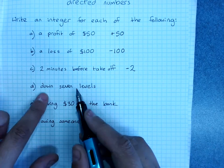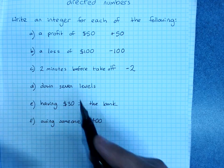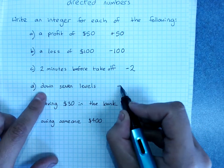Moving down 7 levels. Down is negative, up is positive, so this would be negative 7.